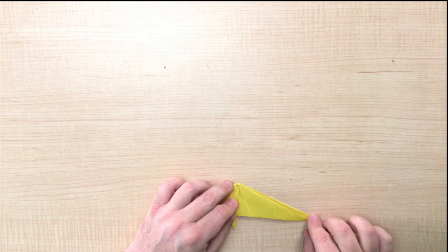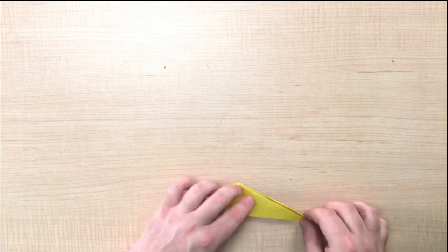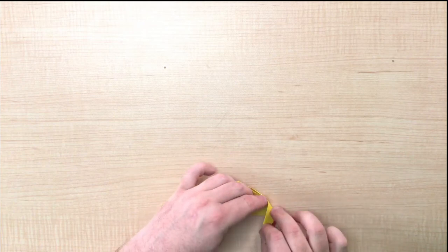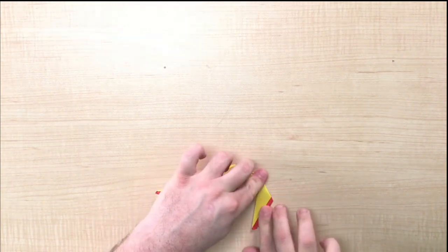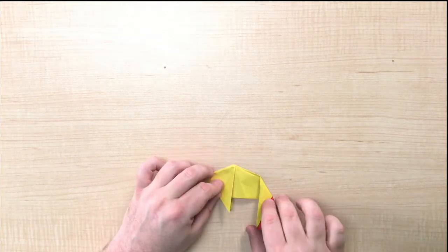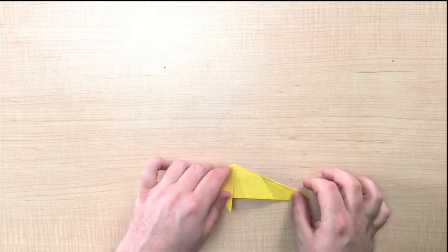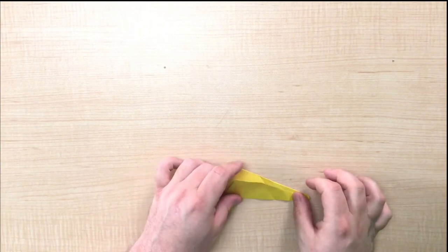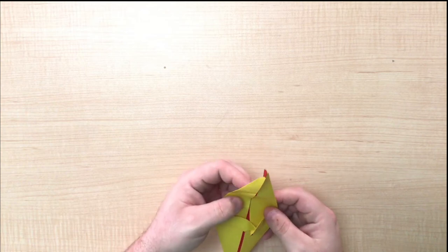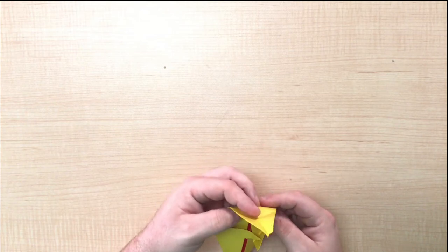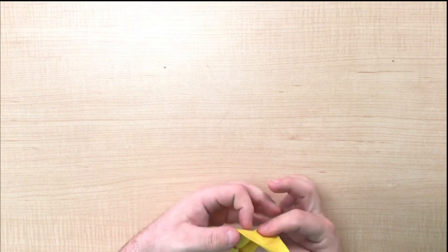Now take the point on the right hand side and fold it in so that it points down. And then unfold. Next, unfold the paper and slightly press down on the top of the point so that it inverts itself.